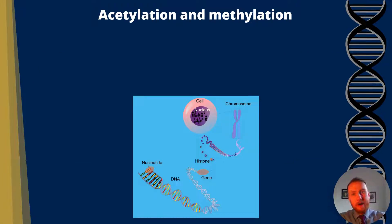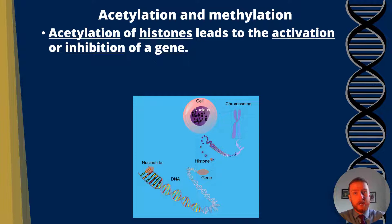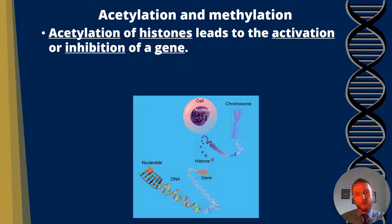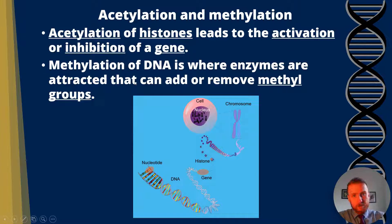So, acetylation and methylation. Acetylation of histones leads to the activation or inhibition of a gene — activation means the gene will be switched on, inhibition means the gene will be switched off. Methylation is where enzymes are attracted that can remove methyl groups.